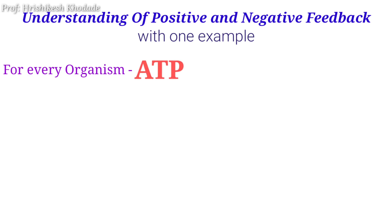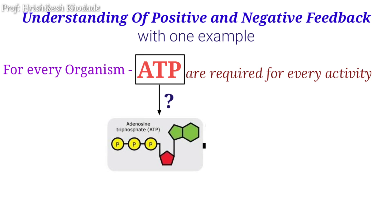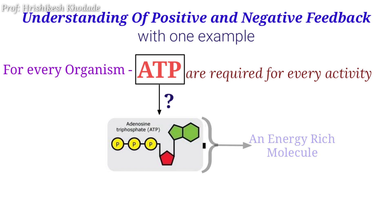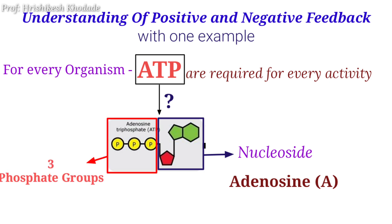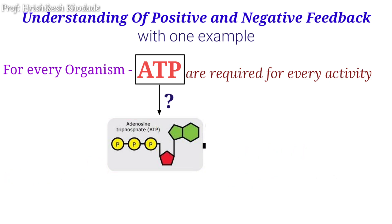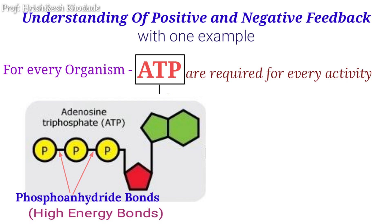In our body, ATP is required for every activity. ATP is an energy-rich molecule which includes one nucleoside known as adenosine and contains three phosphate groups. The bonds between these phosphate groups are known as phosphoanhydride bonds, and these bonds are energy-rich bonds.